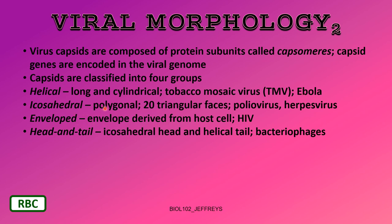Icosahedral capsids are polygonal with many sides — generally 20 triangular faces in a geometric box shape. Examples include poliovirus and herpesvirus. Some viruses have an envelope derived from their host cell — we'll see that when we look at HIV. Head-and-tail viruses, like bacteriophages, have an icosahedral head where the genome is encapsulated and a helical tail. We'll look at bacteriophages more closely later.